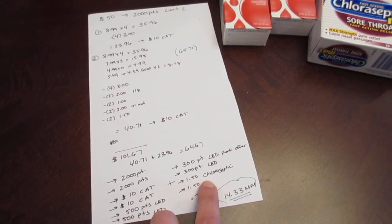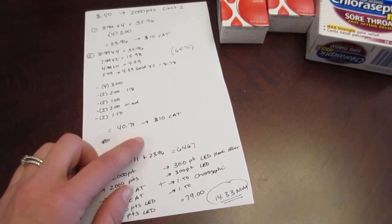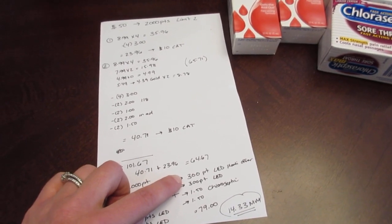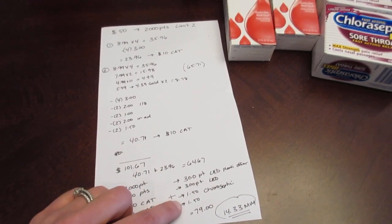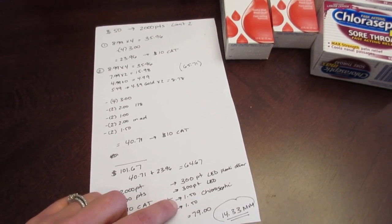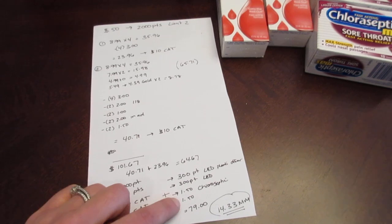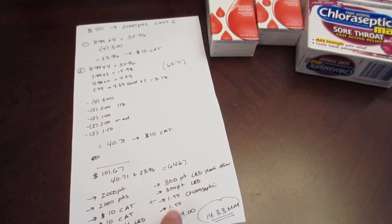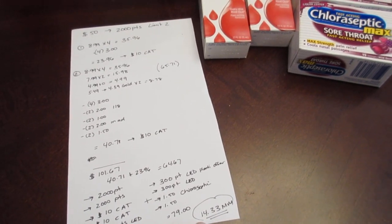And then these were my Plenti offers that I have. These are the offers that not everybody would get. I had a Plenti offer for 300 points when you buy an LED light, and that is a limit of two. So I got those 300 points back twice. I also had a Plenti offer for the ChloroSeptic. It was $1.50 when you buy one. So by buying two of them, it's a limit of two. So I got the $1.50 back twice. So I paid $64.67, I got back $79, so it's a $14.33 moneymaker.